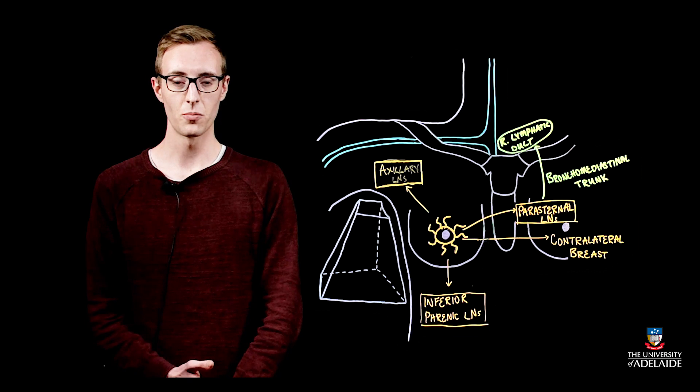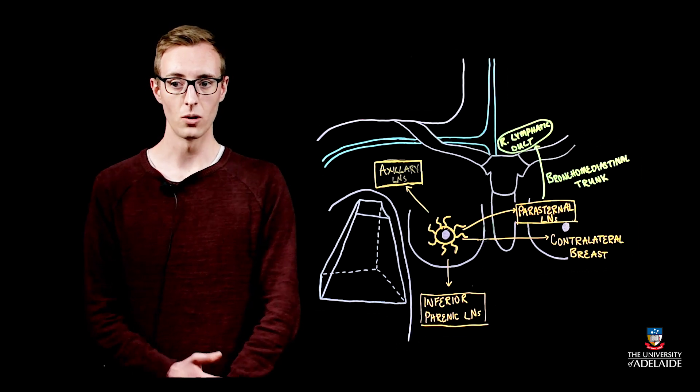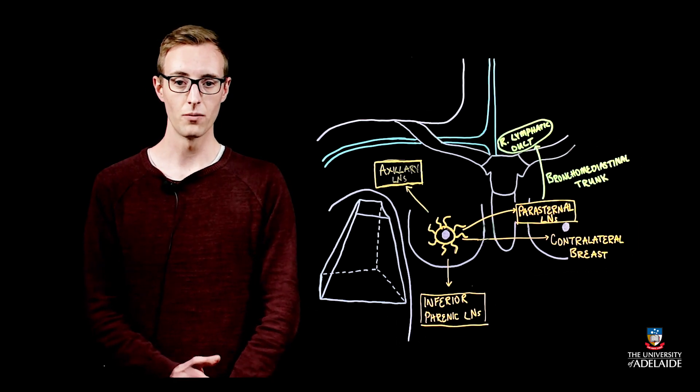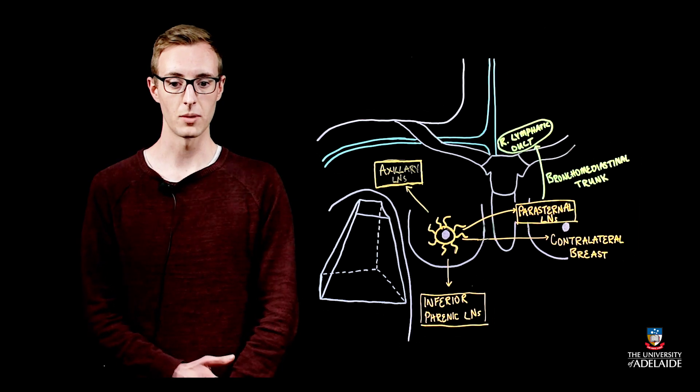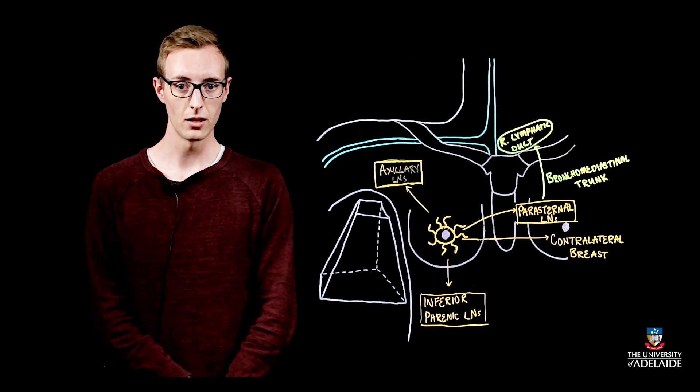The axillary lymph nodes provide the most important pathway for lymphatic drainage from the breast and are therefore very important in terms of breast cancer metastasis. There are five nodal groups that sit within the axilla.